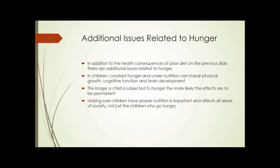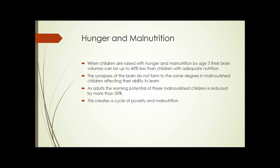Making sure children have proper nutrition is important and affects all areas of society, not just the children who go hungry. When children are raised with hunger and malnutrition, by age three their brain volumes can be up to 40 percent less than children with adequate nutrition. The synapses of the brain do not form to the same degree in malnourished children, affecting their ability to learn. As adults, the earning potential of these malnourished children is reduced by more than 50 percent, creating a continuous cycle of poverty and malnutrition.